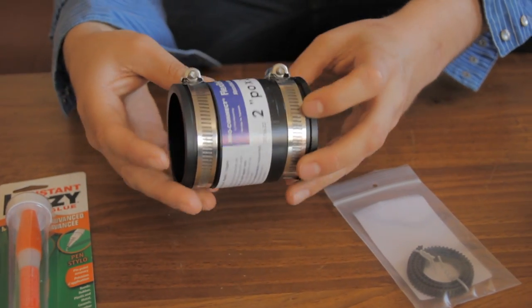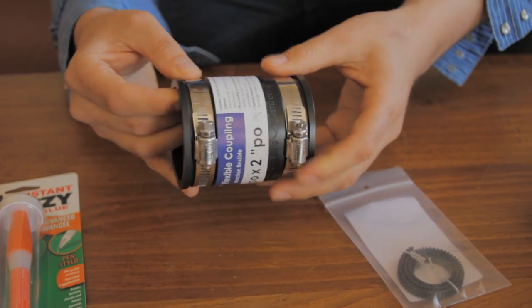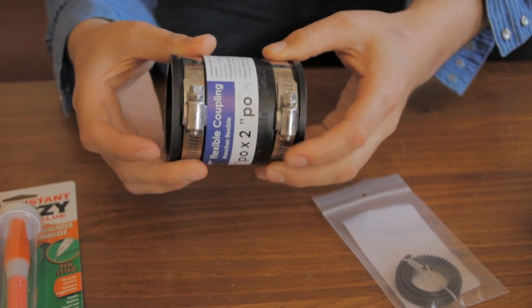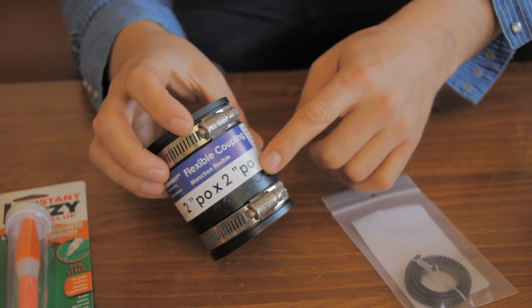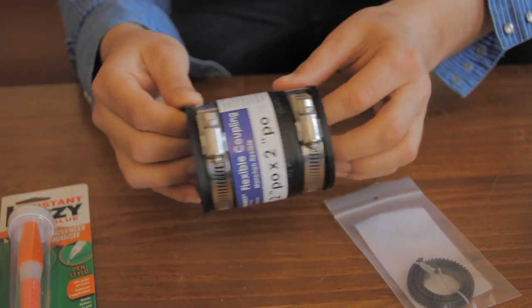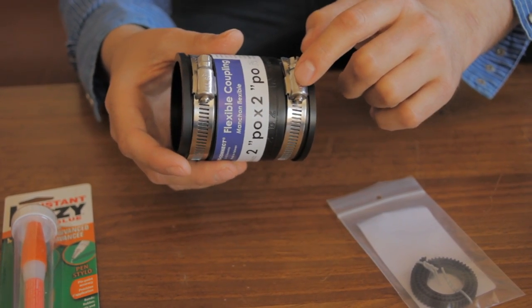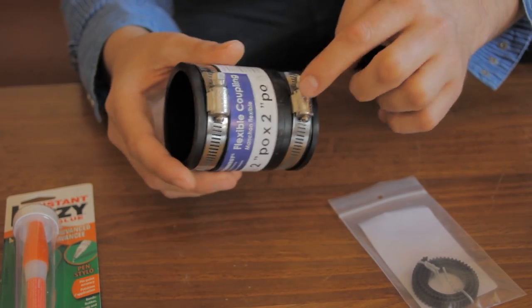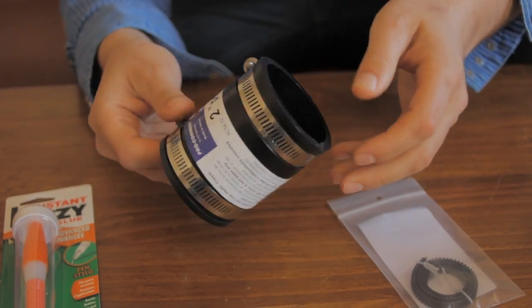Next thing you're going to need is this flexible coupling. You can get it in a hardware store in the plumbing section and what it does is it connects 2 inch piping to 2 inch piping. Fairly inexpensive but I find that these little things really come in handy and you'll see why. This will run you about $6 at most hardware stores.